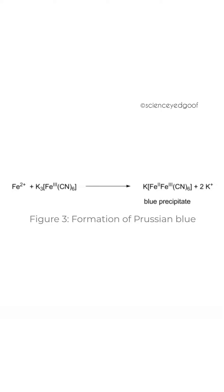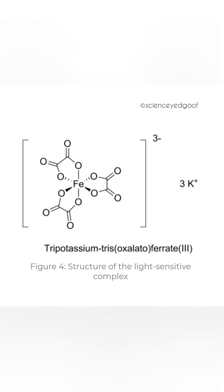The light-sensitive iron(III) complex is the core of the whole process. That atom coordinates six carboxylate groups contained in the anions of di- or tricarboxylic acid. In the case of oxalic acid, iron coordinates three oxalate anions and forms octahedral potassium tris(oxalato)ferrate(III) complex — a stable, crystalline, and relatively water-soluble compound.